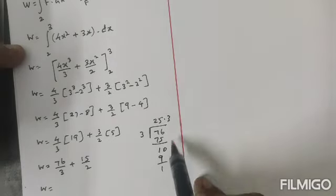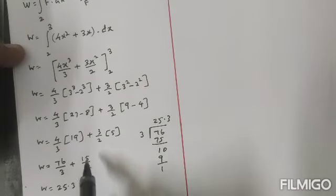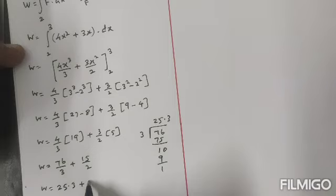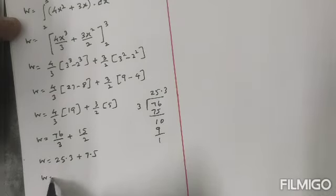76 ÷ 3: 25 times 3 is 75, so the remaining 1, put point, add 0 here, 3 × 3 = 9, so again one, so 25.3. So 76/3 we can write 25.3, plus 15/2, that is 7.5.